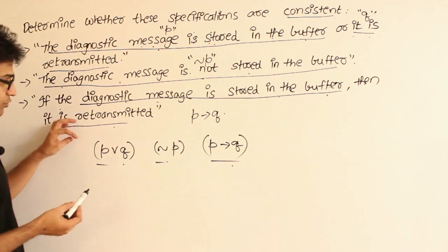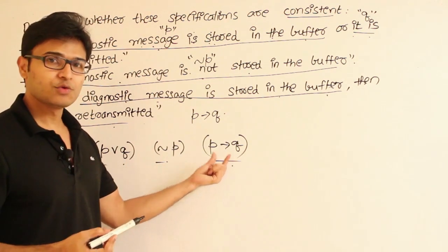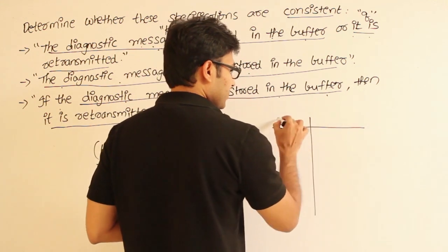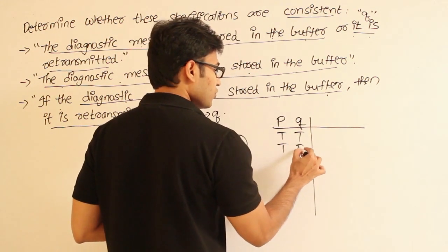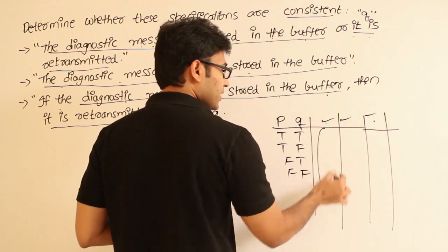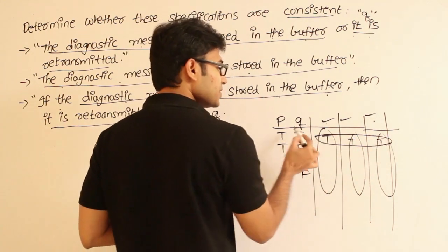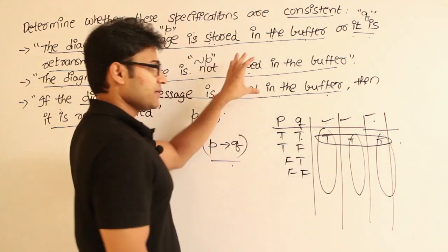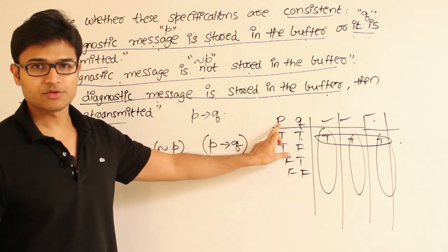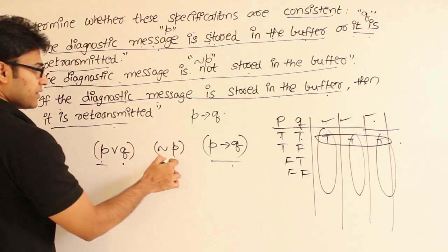We have to find an assignment of truth values — true and false — to each of P and Q in such a way that all three statements are true simultaneously. Some people say use the truth table: try all possibilities — true/true, true/false, false/true, false/false — and check all three statements. If for any assignment all three are true, then we can say the system is consistent. We need not verify all of them; if we can find at least one assignment that makes all three statements true at the same time, that is enough.